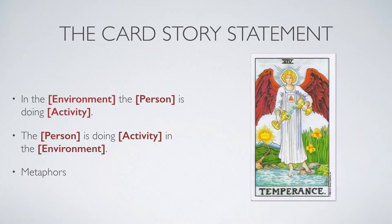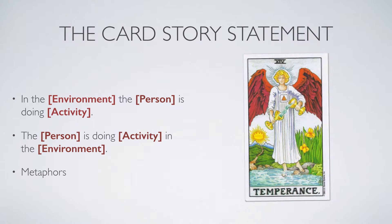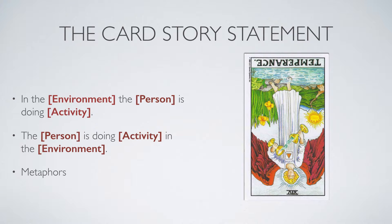So you use the same logic for the card story statement as you would use for the upright card — the same system to interpret the story for the reverse card. It's really not that much work. People make reverse cards sound scary, but there's really no need for that. Go ahead — pause the video, write your passive and active card story statement for Temperance reversed, then come back and let's see what we've both come up with.